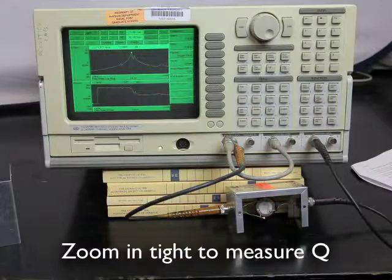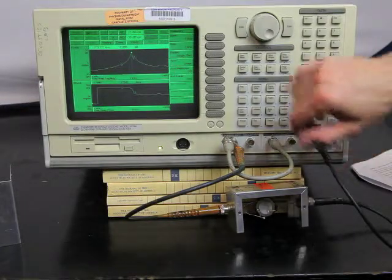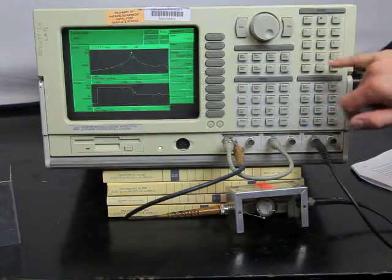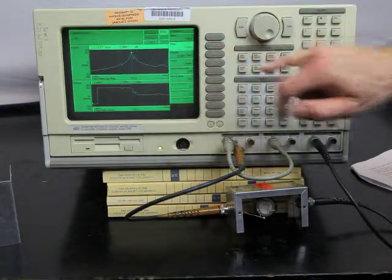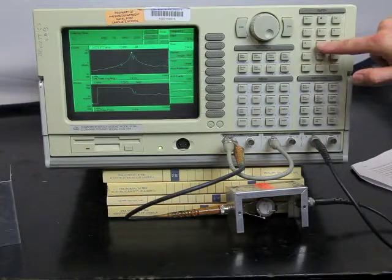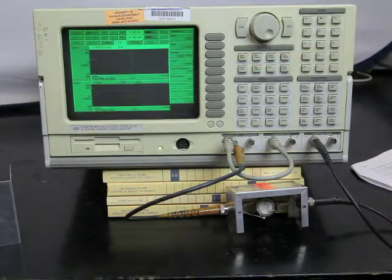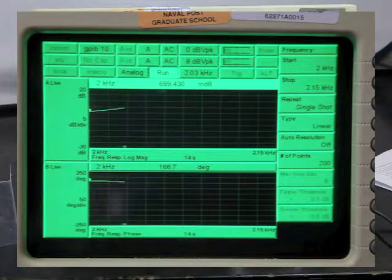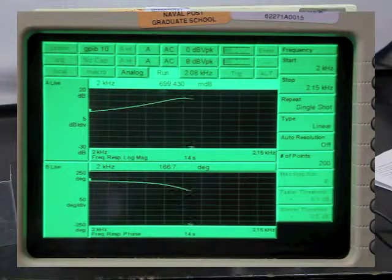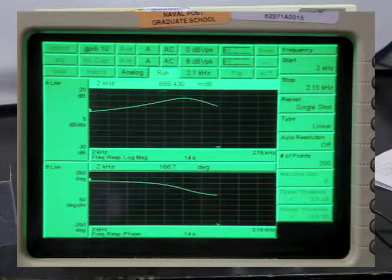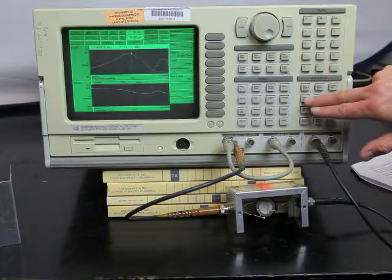In order to measure the Q of this peak, I'm going to have to zoom in a lot tighter than this. Let's try a start frequency of 2 kilohertz and a stop frequency of 2.15 kilohertz.